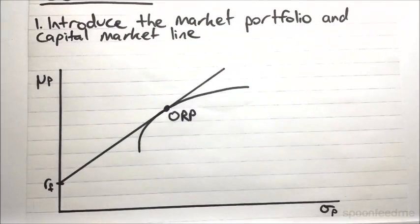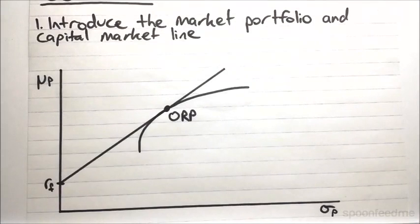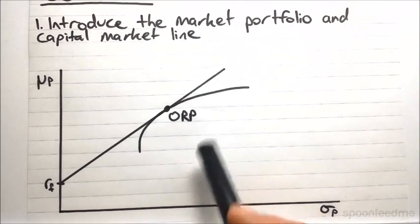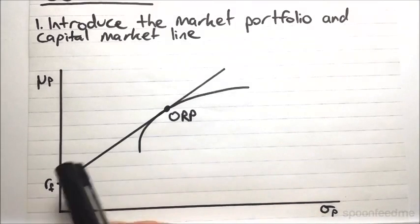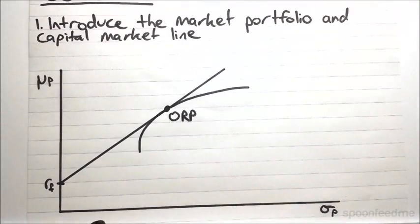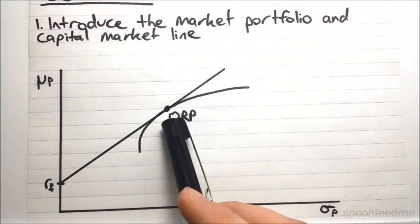The following should be pretty familiar from our Markowitz portfolio theory. This graph is showing us all of the portfolios we can attain using the risk-free asset and risky assets. In particular, this line shows us the efficient portfolios we can get, which are a combination of the risk-free asset and this optimal risky portfolio.